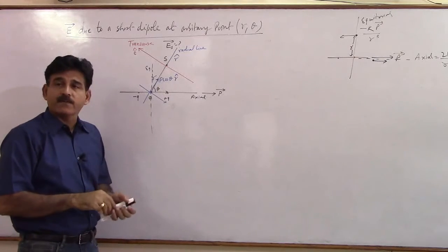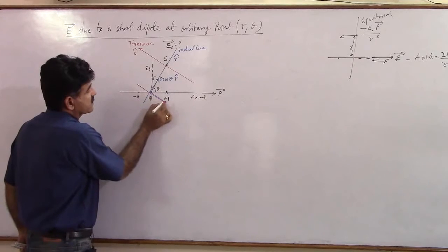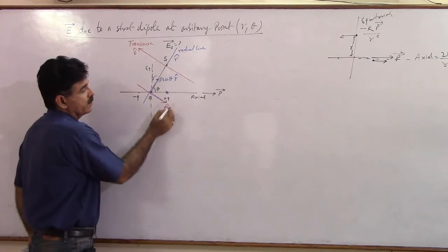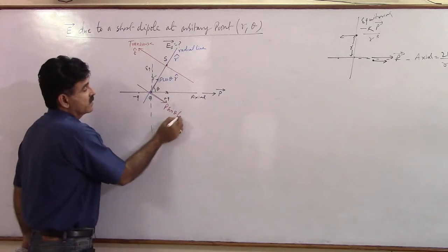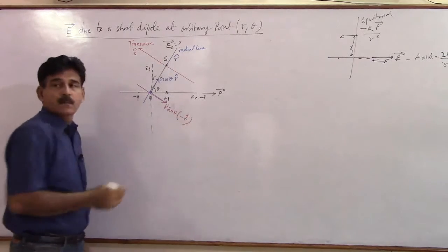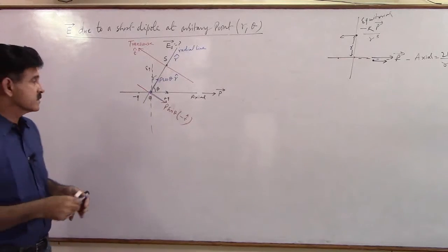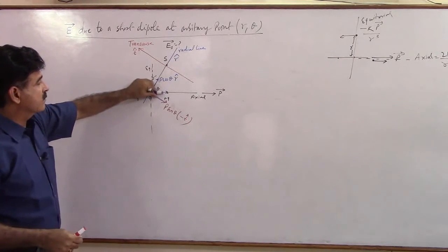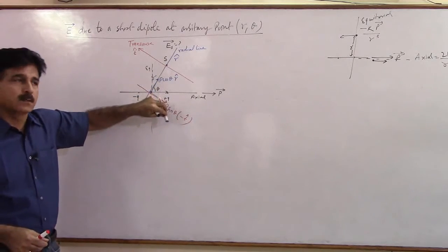The second component of it will be directed along this line, and that will be P sin theta. What's the direction? Minus T cap. So far no problem. All that I have done is this P I have resolved along this line and along this line.